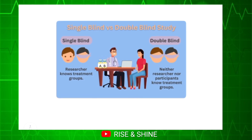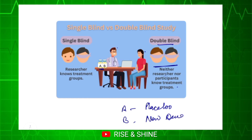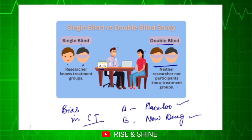To compare both: in double blind, neither the researcher nor the participant knows the treatment group. Suppose A is placebo and B is new drug — both of them are unaware. In single blind, the doctor knows that the patient is taking placebo or a new drug, but the patient is not knowing. To recap: why is blinding done? It is done to avoid bias in clinical trials, and the most commonly accepted data is from double blind clinical trials.